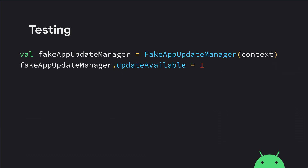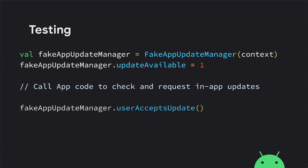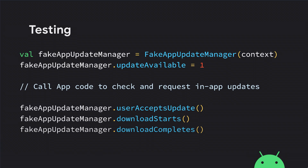You can set up that there is an update available, then call all of your code and UI, and drive the update. You can simulate that the user accepts the update, start the download, and simulate that the download completes. This allows you to do unit testing and check how your update code works.